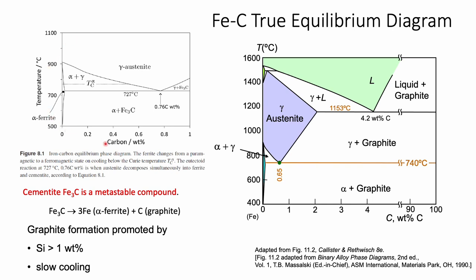This phase diagram is very important for engineering applications based on Fe-C alloys. However, this is not the real phase diagram if we consider thermodynamics based on the final thermally stabilized structure, because cementite Fe3C is not the thermally stabilized structure. Fe3C is a metastable compound. If you have the proper conditions including time and temperature, Fe3C will transfer to ferrite plus graphite. Graphite is the final stable structure. Specifically, if you have additional silicon inside based on slow cooling, you have more opportunity to get the final structure based on graphite.